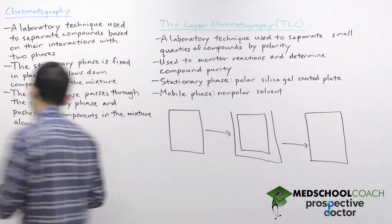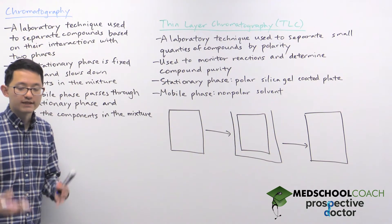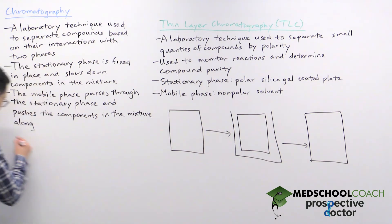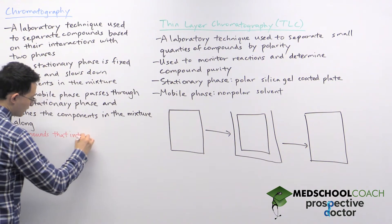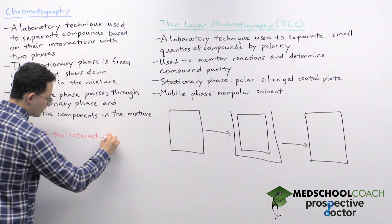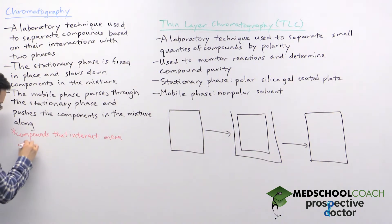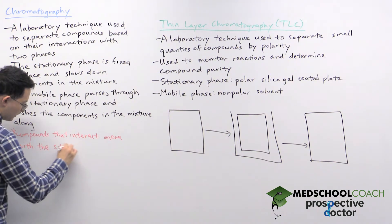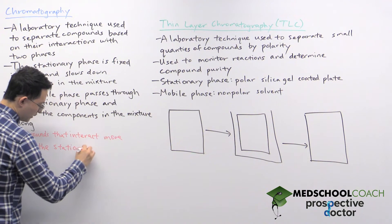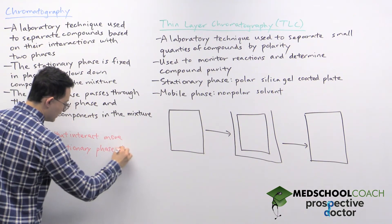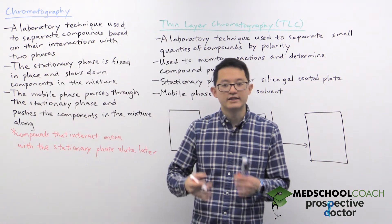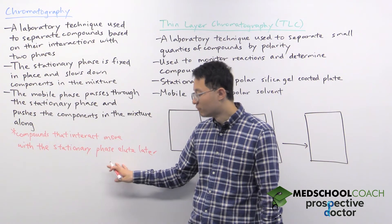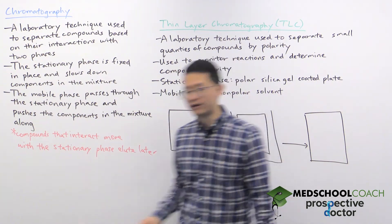Compounds that interact more with the stationary phase elute later, and at the same time you can say the opposite: compounds that interact more with the mobile phase will elute first.